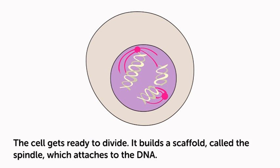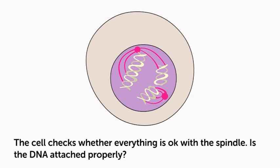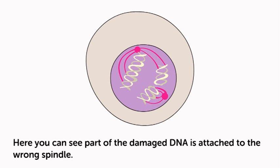The cell gets ready to divide and builds a scaffold called a spindle, which attaches to the DNA. The cell checks again that everything is okay. Is the DNA attached properly? Here you can see that part of the damaged DNA is attached to the wrong spindle.